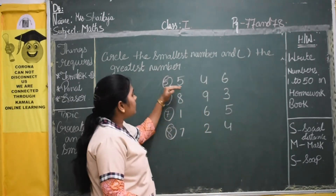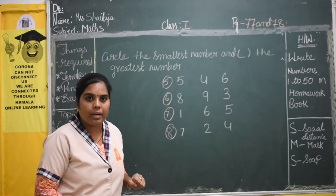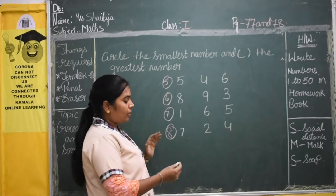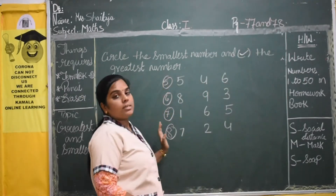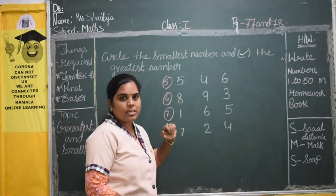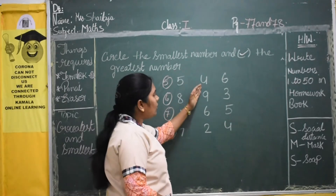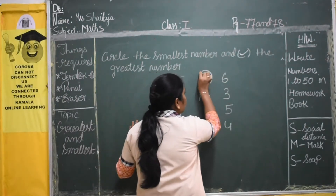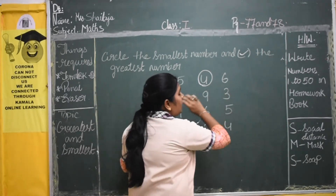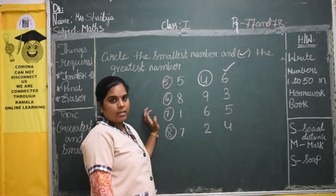Now in this three, among these three numbers, we should circle the smallest number and we should put a tick mark to the greatest number. So among these three numbers, which is the smallest number? 4. Yes, 4 is the smallest number. We should circle the smallest number. And 6 is the greatest number — we should put a tick mark to 6. Understood?